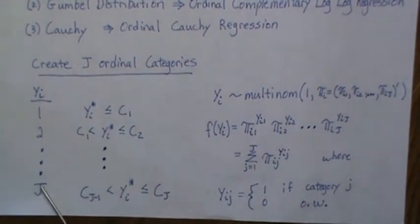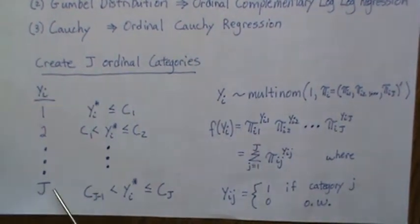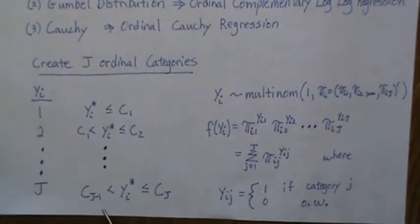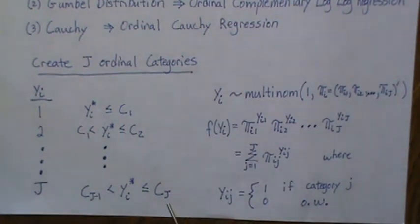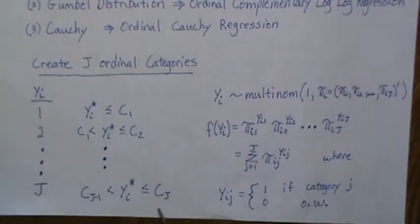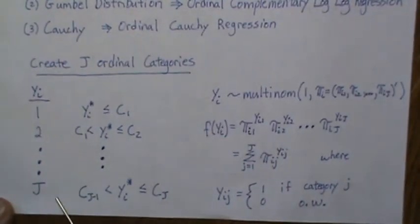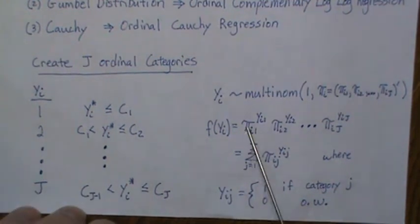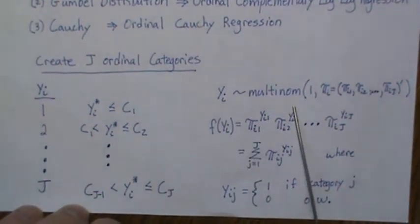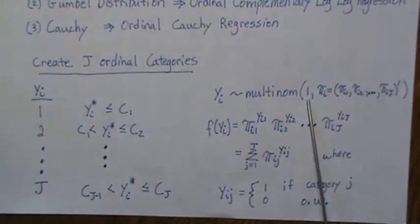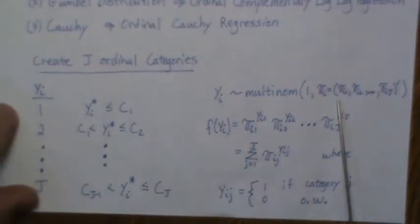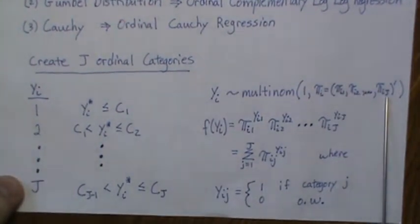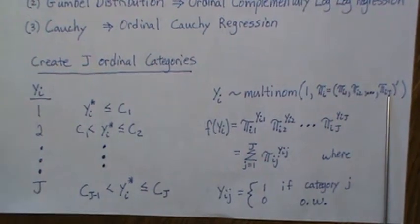And it goes all the way down to J. So y will equal J when it's between these two cutoffs, cJ minus one and cJ. Now, y actually can be thought of as a multinomial distribution. There's J categories. And it is. So yi is a multinomial distribution with n equal one, right? There's only one observation. And then each category has a certain probability of being in that category.